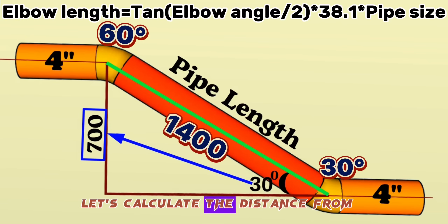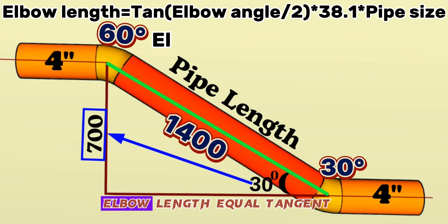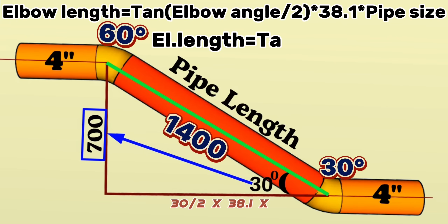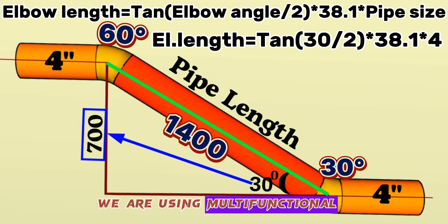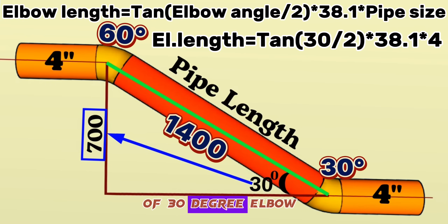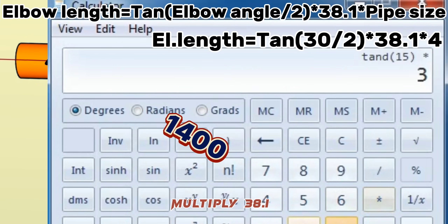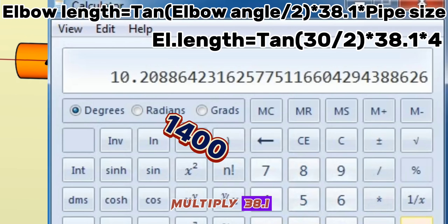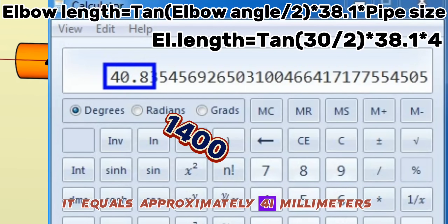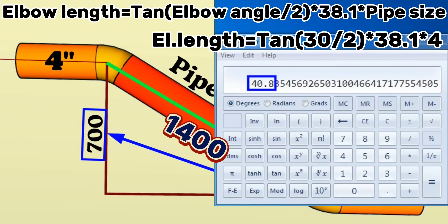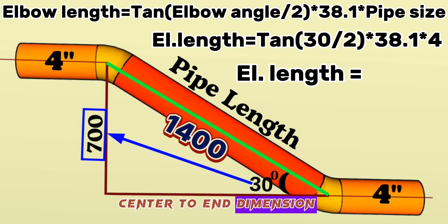Let's calculate the center-to-end distance of the 4-inch elbow cut at 30 degrees. Elbow length = tan(30 ÷ 2) × 38.1 × 4. Using the calculator: 30° divided by 2 equals 15°, tangent of 15° multiplied by 38.1, then multiplied by 4-inch pipe size equals approximately 41 millimeters. So the 4-inch 30-degree elbow's center-to-end dimension is 41 millimeters.